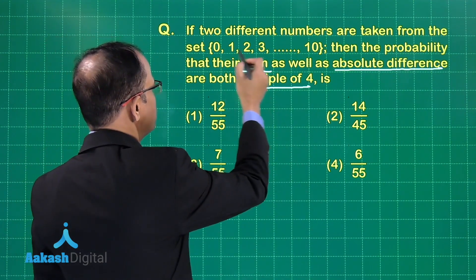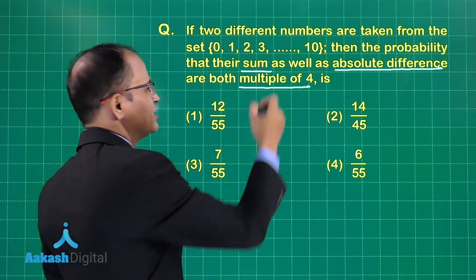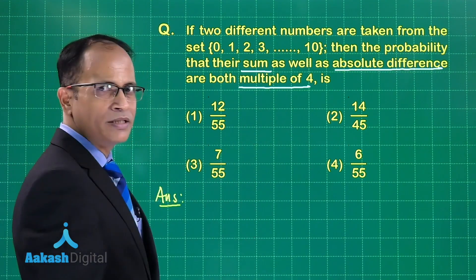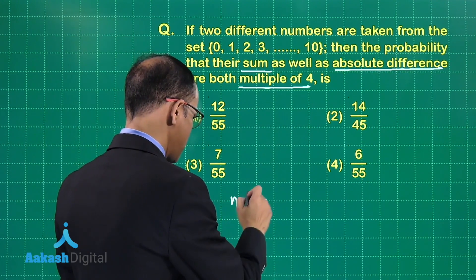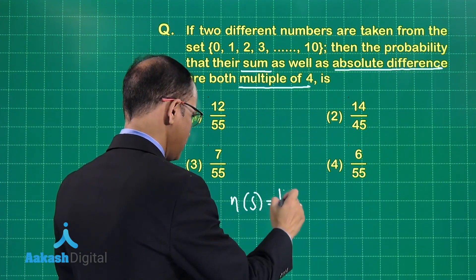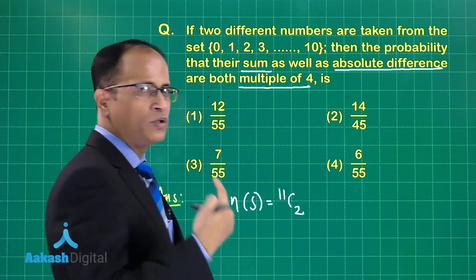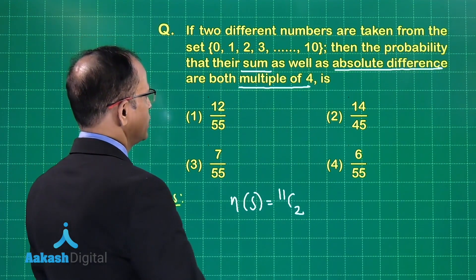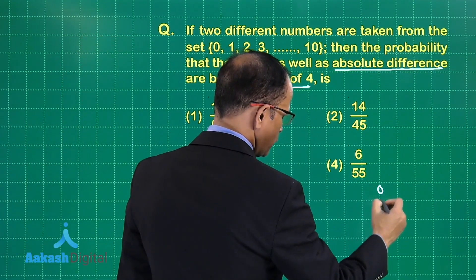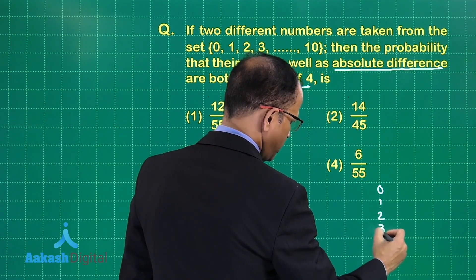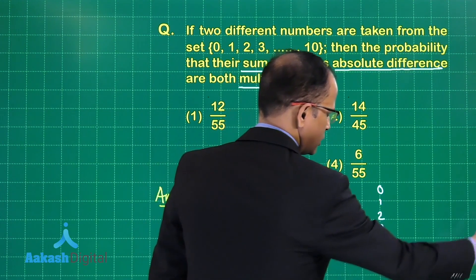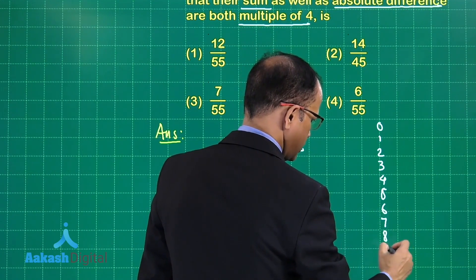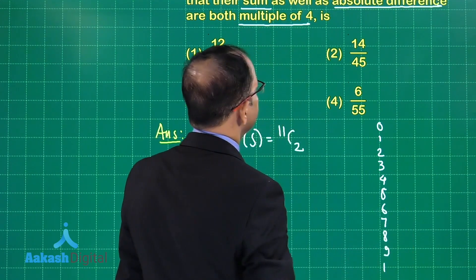First, how many elements are in the sample space? We have 11 numbers, so the sample space is 11C2. Writing out the numbers: 0, 1, 2, 3, 4, 5, 6, 7, 8, 9, 10.